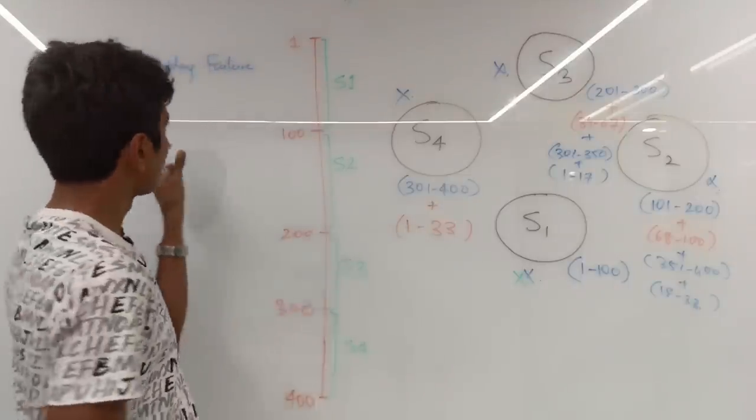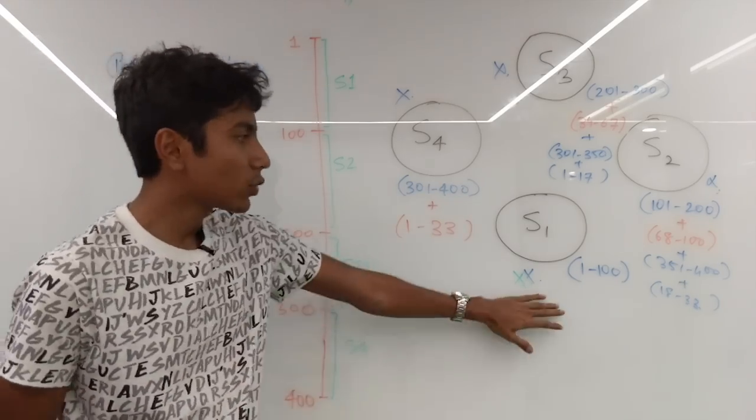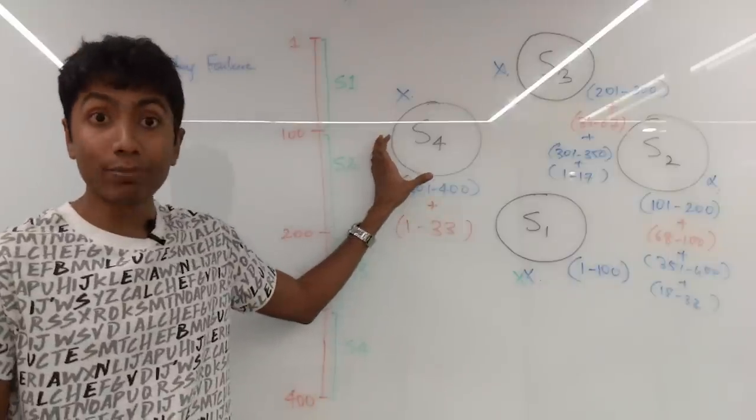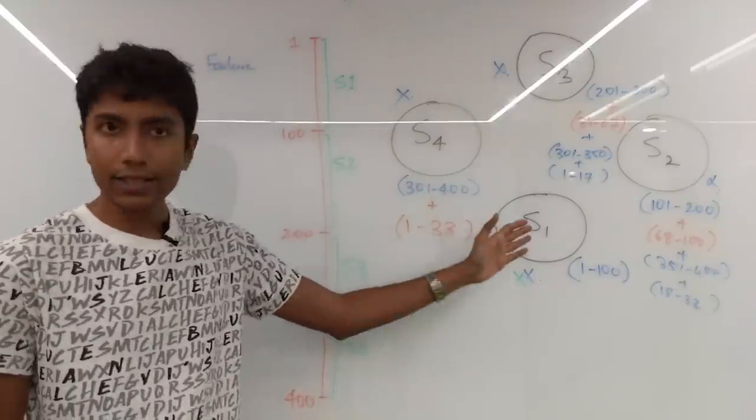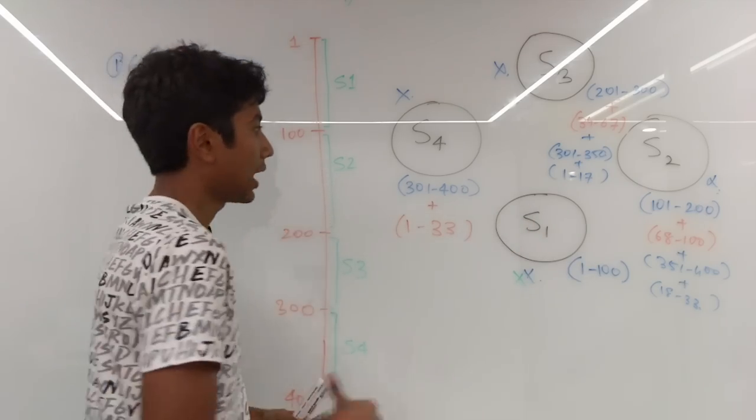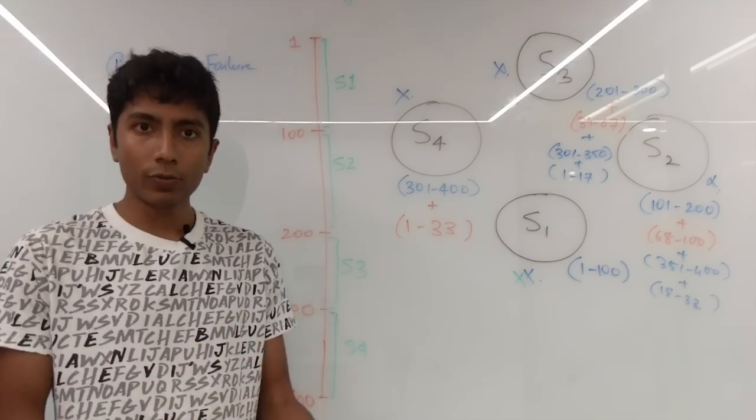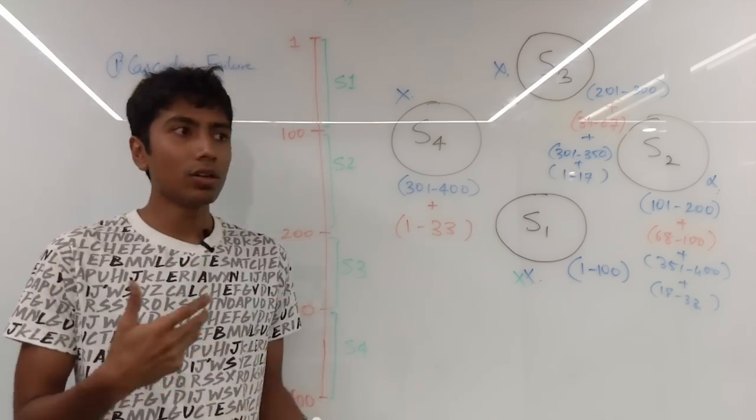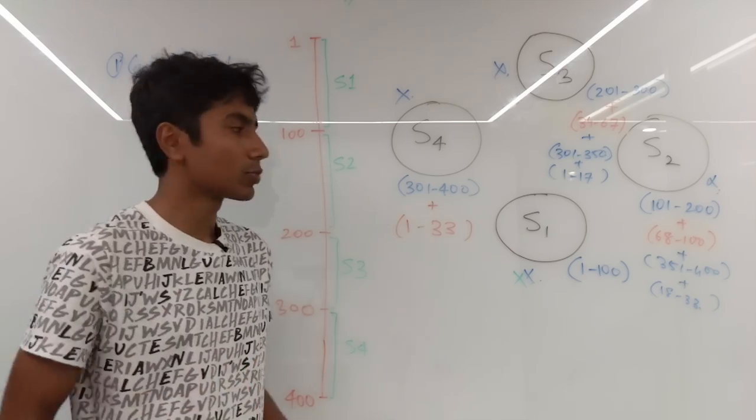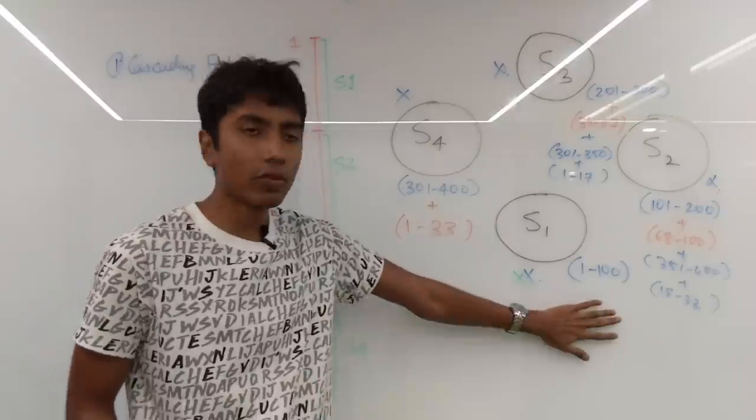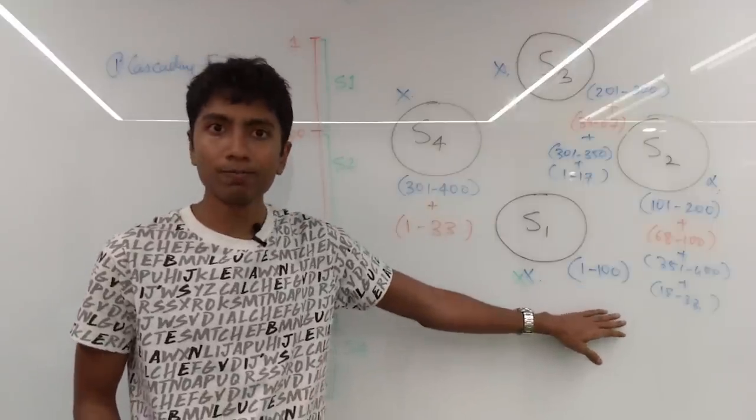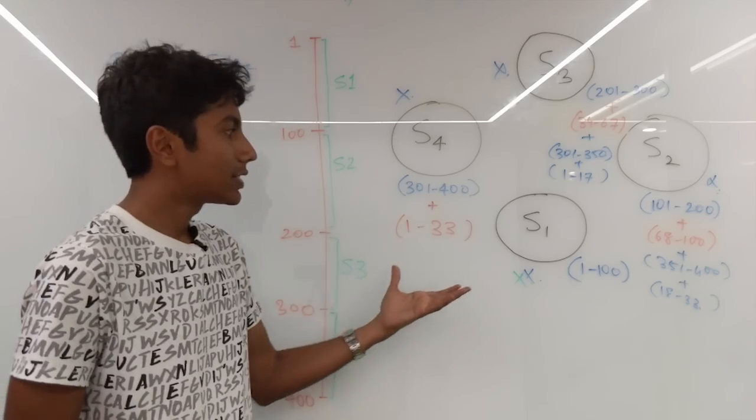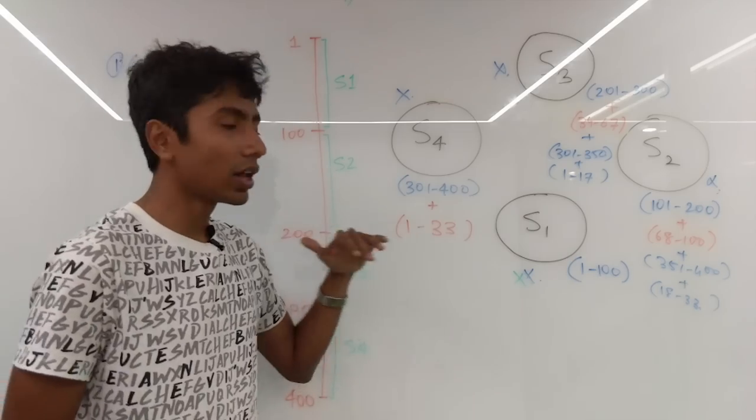As you can see, this cascading failure is a race against time. When S1 had crashed, there's that small time gap for bringing in a new server before S4 takes that much load and crashes. One workaround is to just stop serving requests for all users having request IDs one to 100. That's not really a solution, but if the other services can't take in more load, it's better to be available to some users than to be available to none of the users.